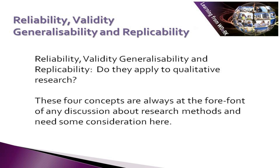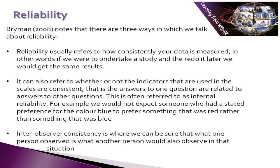These four concepts are always at the forefront of any discussion about research methods and need some consideration here. First, let's take a look at reliability. Bryman notes that there are three ways in which we talk about reliability. Reliability usually refers to how consistently your data is measured — would you be able to get the same results if you repeated your study? It can also refer to whether or not the indicators used in the scales are consistent, often referred to as internal reliability.